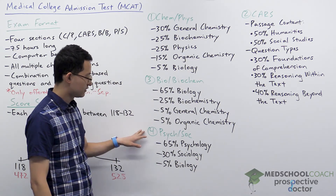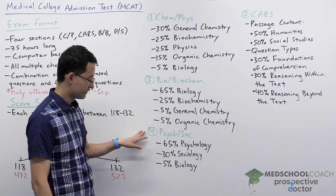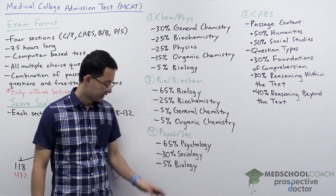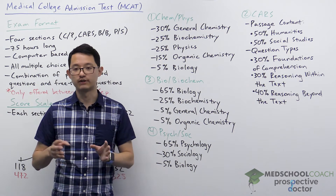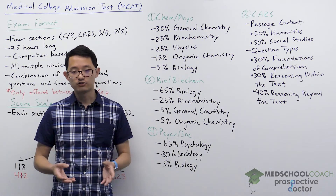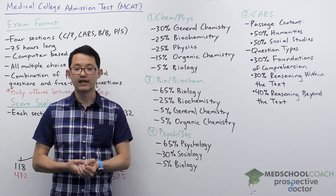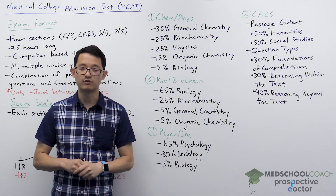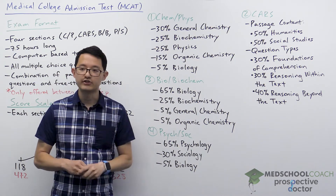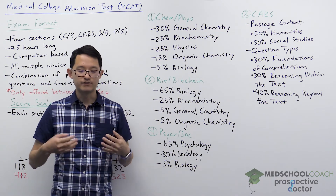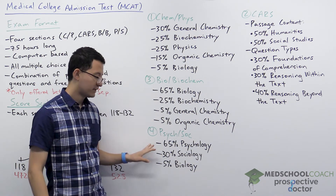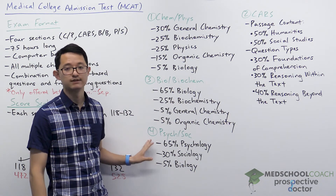The last section is the Psychological, Social, and Biological Foundations of Behavior. It is 65% psychology, 30% sociology, and 5% biology. The psychology and sociology are introductory level, so intro to psych and intro to sociology are sufficient. Many pre-med students aren't able to fit these courses into their schedule before the MCAT, and that's fine — because psychology and sociology are mostly memory-based on the exam, so if you're good at memorizing terms and concepts, you'll probably be okay even without taking the courses.